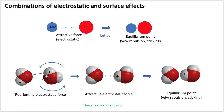Here, one water molecule reorients a second water molecule through an electrostatic reorienting force. I've redrawn the second water molecule rotated so that the negative charge of the first faces the positive charge of the second — they will be attractive and draw together. Once at their equilibrium point, they won't get any closer due to van der Waals surface overlap, and they will then stick together. There is always sticking once molecules get close enough.